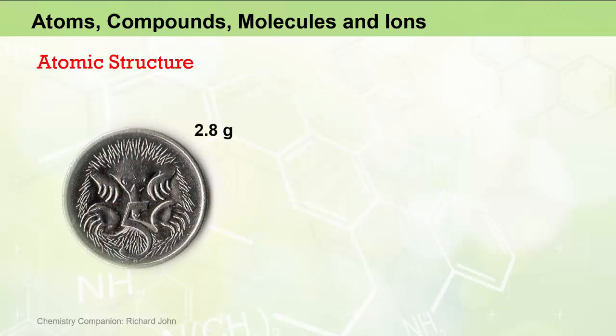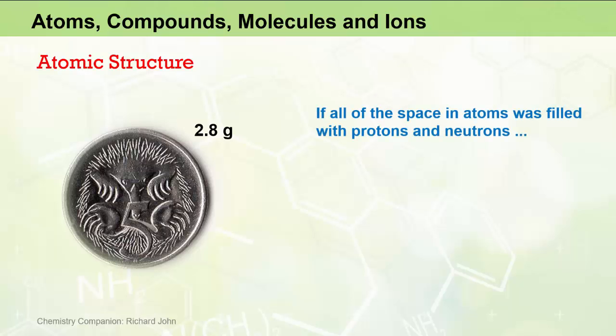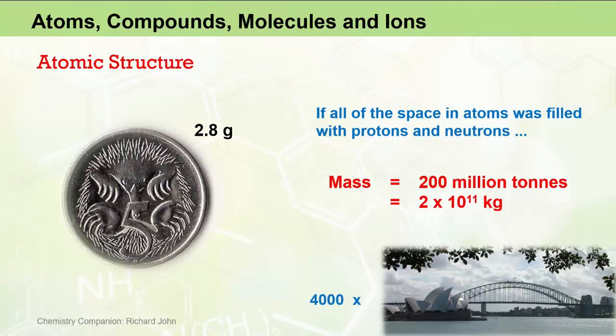Another thing worth noting, to give you an idea of the relative size and mass of these subatomic particles, is to consider that if all the space in an atom was filled with protons and neutrons, the mass of an Australian 5 cent coin would be greater than 200 million tons, or 2 by 10 to the 11 kilograms, and this would be equivalent to the mass of approximately 4,000 Sydney Harbour bridges. So clearly the nuclei of atoms are very, very dense, compared to the density of the atom as a whole.